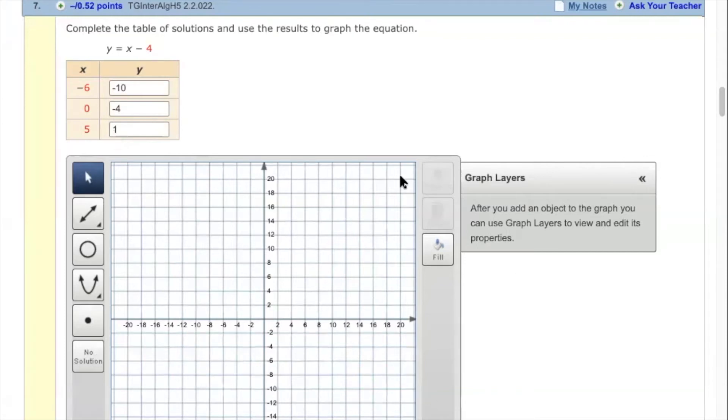Okay, so here's our graph. Woohoo! This key, this button right here is the little pointy. It just kind of gives you an arrow.